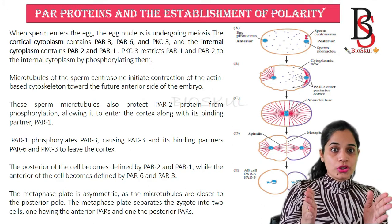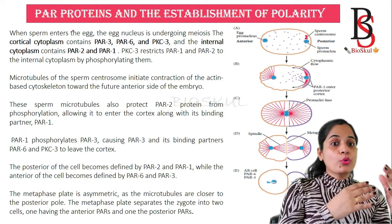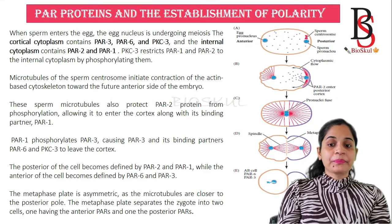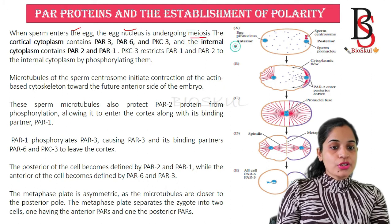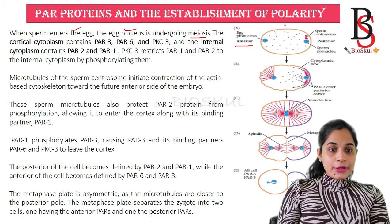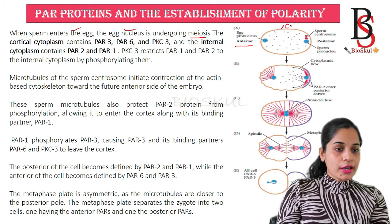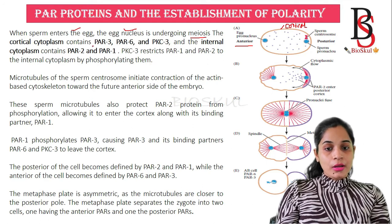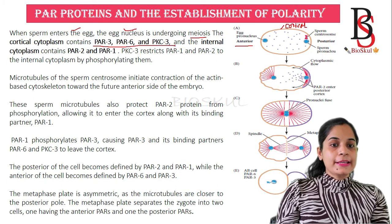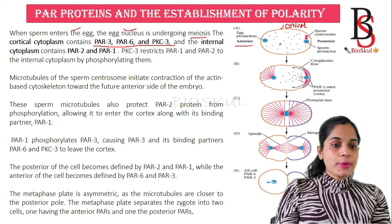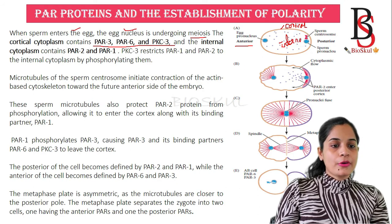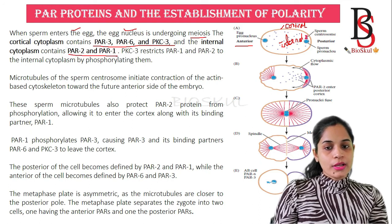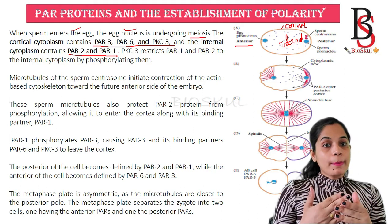Now we'll see the PAR proteins and their role in establishing the anterior and posterior axis. When the sperm first enters the egg, the egg nucleus begins meiosis. The cortical cytoplasm — shown in orange — contains the PAR proteins PAR-3, PAR-6, and PKC-3. The internal cytoplasm — marked by purple colored dots — contains the PAR proteins PAR-2 and PAR-1.